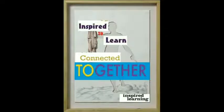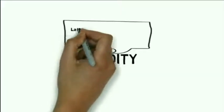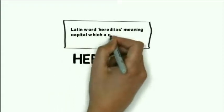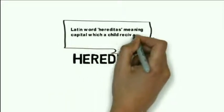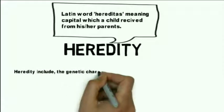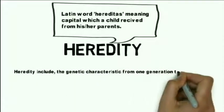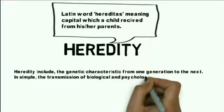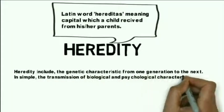Welcome back. Today's topic is on heredity and environment. Heredity is derived from the Latin word 'heredilus', meaning what a child receives from his or her parents. Heredity includes the genetic characteristics passed from one generation to the next — the transmission of biological and psychological characteristics from parent to offspring.